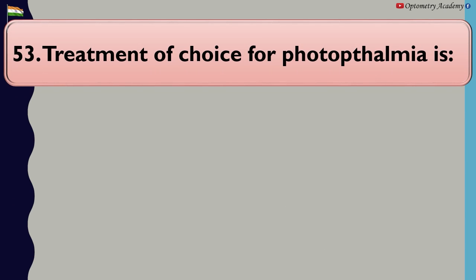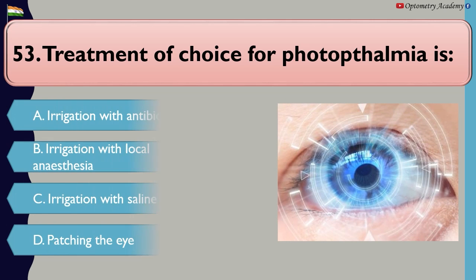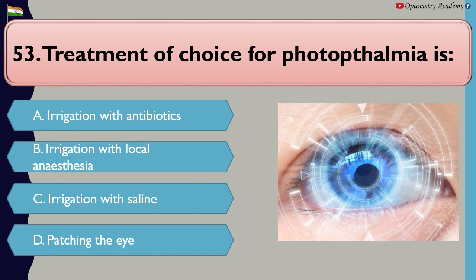Treatment of choice for photoophthalmia is: A. Irrigation with antibiotics, B. Irrigation with local anesthesia, C. Irrigation with saline, D. Patching the eye.